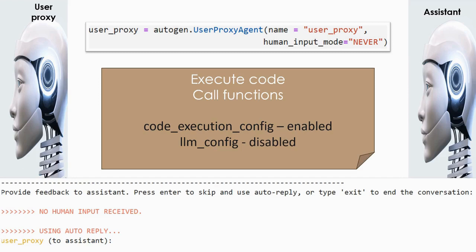The assistant passes Python code to the user to execute so it can get the final answer. If you give user execution_config enabled, which is the default, the user proxy will automatically run the code sent by the assistant. By default, LLM config is disabled, and only when it is enabled will it automatically get the response from the LLM if there is no Python code to be executed.